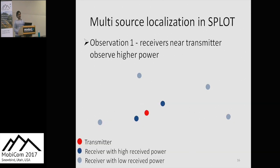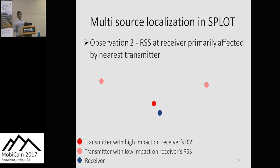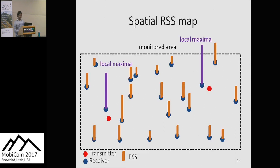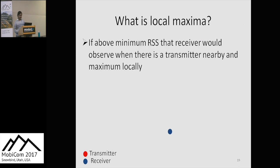Our approach in SPLOT begins with three important observations. The first says that receivers located near a transmitter usually observe higher power than ones far away. The second observation says that the received signal strength at a receiver is primarily affected by the nearest transmitter. With these two observations, we first create a spatial map of the RSS measurements and then identify the local maximas. What are these local maximas? We create a circle of radius R around a receiver and consider a transmitter anywhere inside this circle.